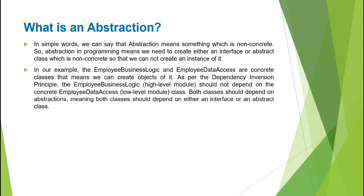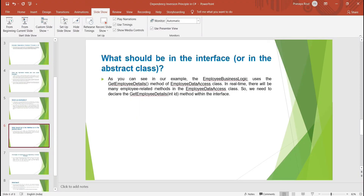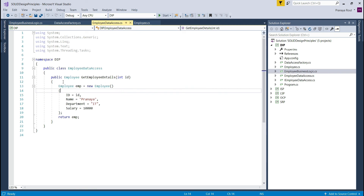The question is: what should be in the interface or abstract class? In our example, EmployeeBusinessLogic uses the GetEmployeeDetails method of EmployeeDataAccess. In real time, there may be many employee-related methods in EmployeeDataAccess, such as GetAllEmployeeDetails, AddEmployee, DeleteEmployee, and UpdateEmployee. So whatever operations exist in EmployeeDataAccess, those operations should be defined within an interface. Let us create that interface and see how to implement it.